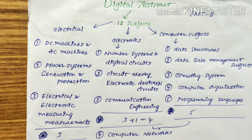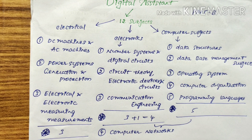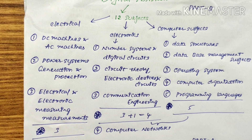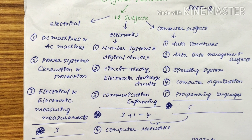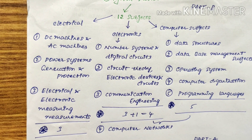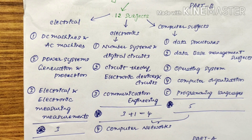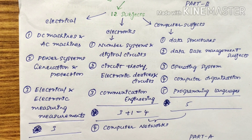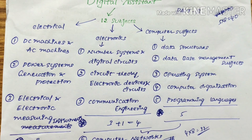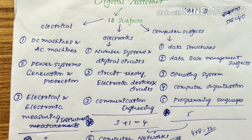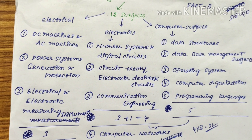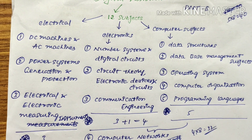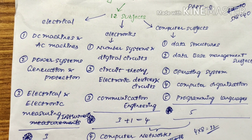For electrical subjects, there are three: Machines, Power System Generation, and Electrical and Electronic Measurements. Two subjects — Machines and Electrical and Electronic Measurements — are common to both electrical and electronics students, since electronics students also have a minimum knowledge of these areas from their engineering studies. Regarding marks distribution: computer subjects get 40 marks (5 subjects × 8 questions each), electronics subjects get 32 marks (4 subjects × 8 marks), and electrical subjects get 24 marks (3 subjects × 8 marks). Each subject is given equal preference.